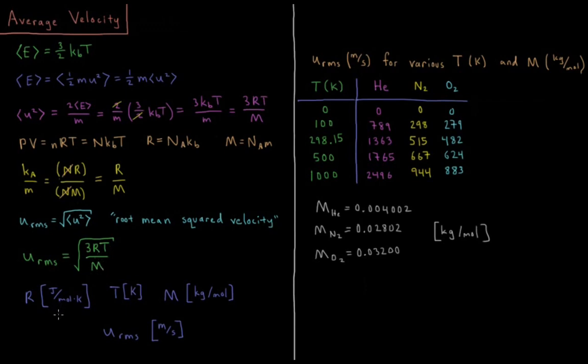So again here, the biggest thing to notice and not get tripped up on is the units. R is typically joules per mole Kelvin, temperature in Kelvin always, molar mass in kilograms per mole. And that will give you the root mean squared velocity in meters per second, the SI unit of velocity.